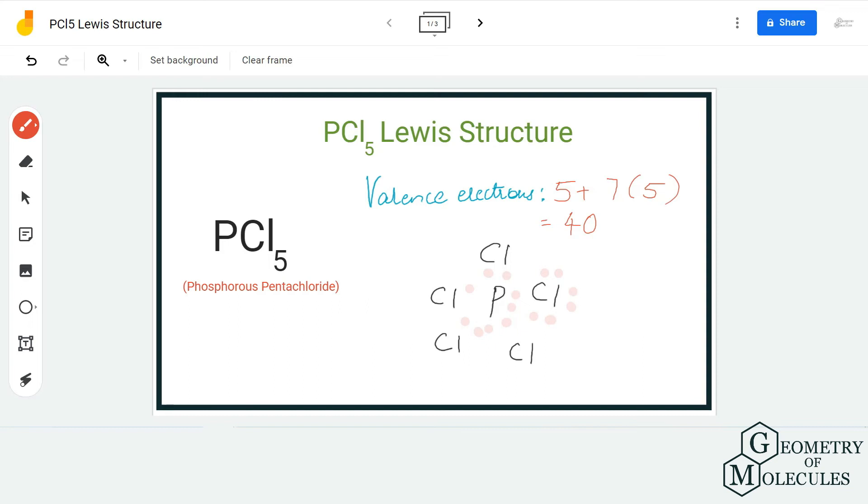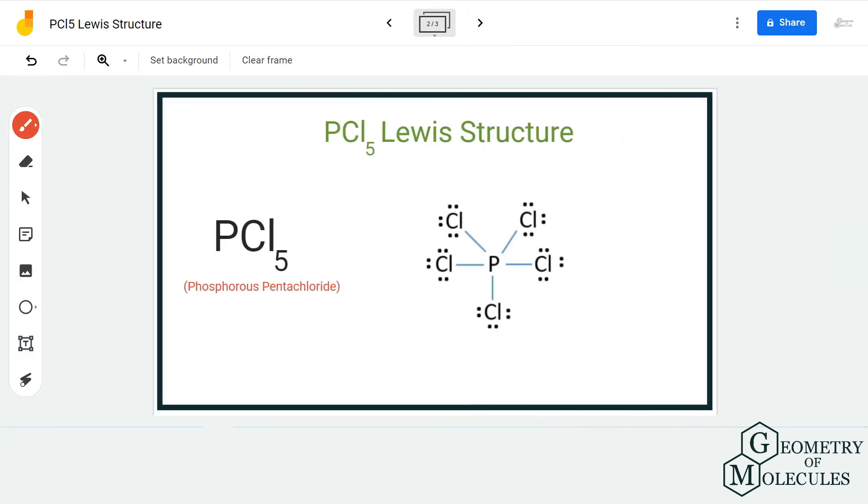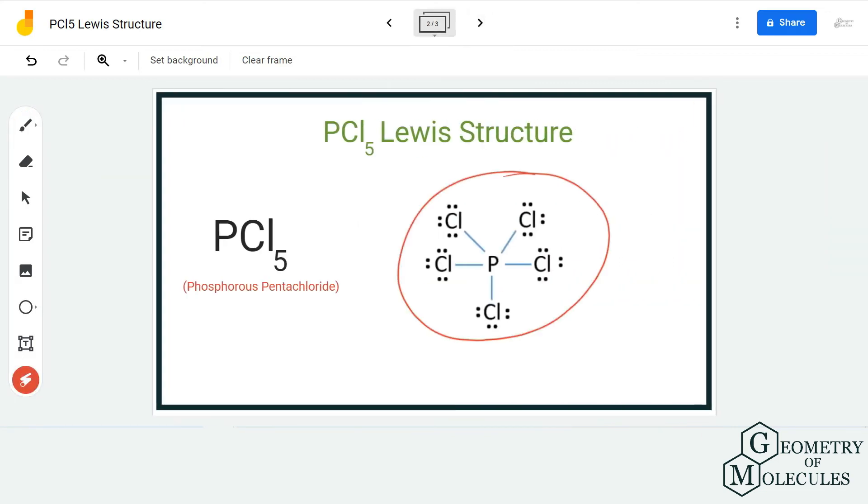only need six more valence electrons each to have a complete octet. We place six valence electrons around each chlorine atom. Doing that, we use up all our 30 remaining valence electrons. Now, if you look at this structure, you will see that all chlorine atoms have a complete octet with eight valence electrons